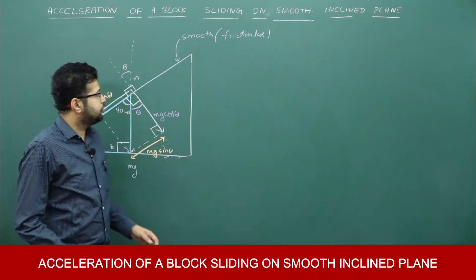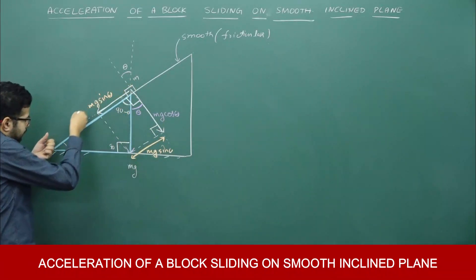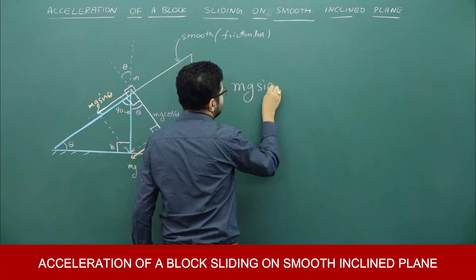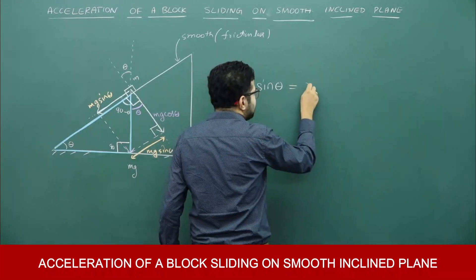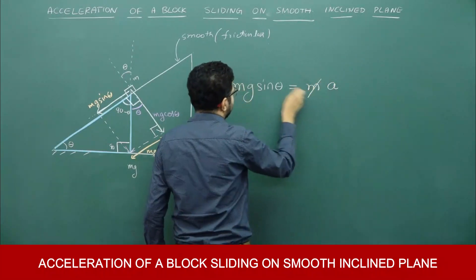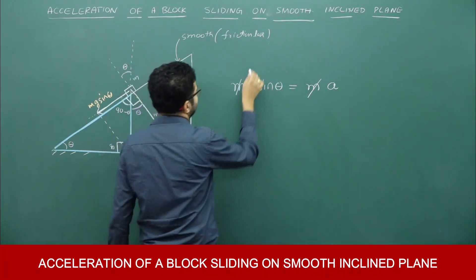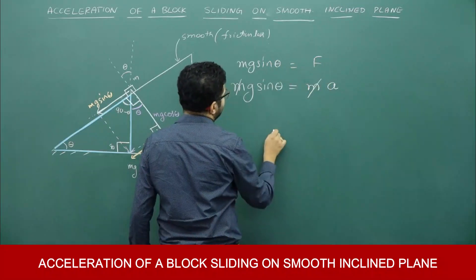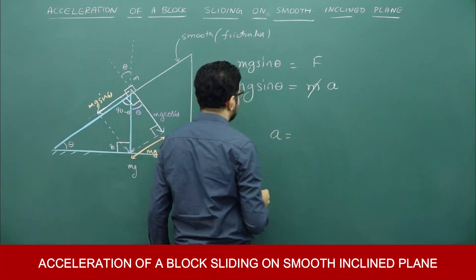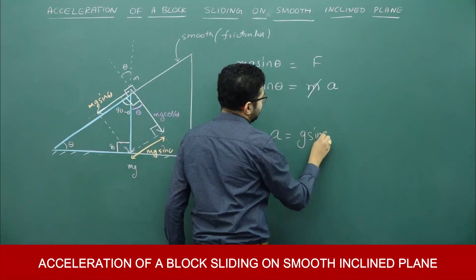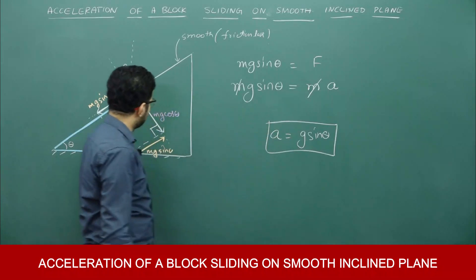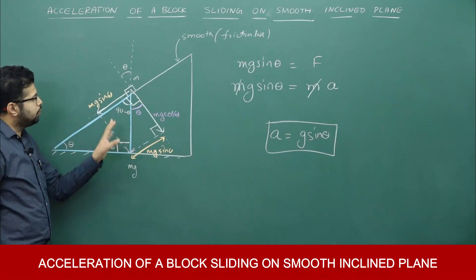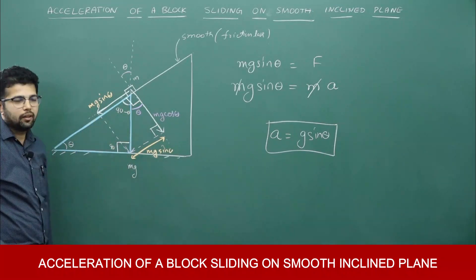Mg sin theta is the force acting along the inclined plane, so mg sin theta is responsible for the acceleration of M. Therefore, mg sin theta equals M times A, and M gets cancelled, giving acceleration equal to g sin theta on a smooth inclined plane. In the laws of motion chapter, in the case of inclined planes and many other problems, this resolution of vectors will come up, so you need to understand the resolution of vectors carefully.